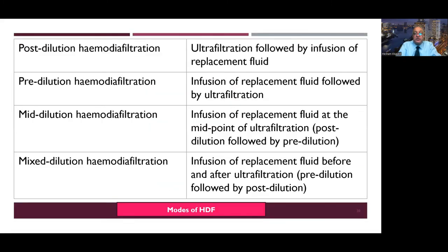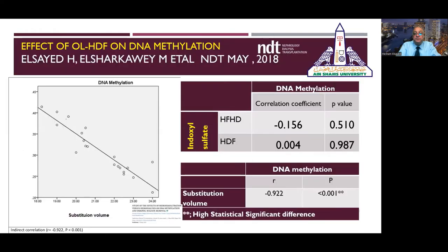Online hemodiafiltration typically uses post-dilution mode; however, pre-dilution hemodiafiltration can be used for patients with lower blood flow or those needing lower anticoagulation doses. At Ain Shams University, clinical studies on long-term hemodiafiltration showed DNA methylation improvement — hemodiafiltration decreases DNA methylation as an epigenetic change, and this effect is dependent on convection dose, with increasing convection doses further improving DNA methylation.